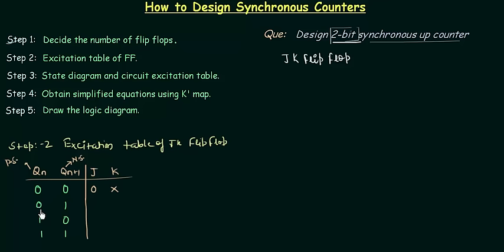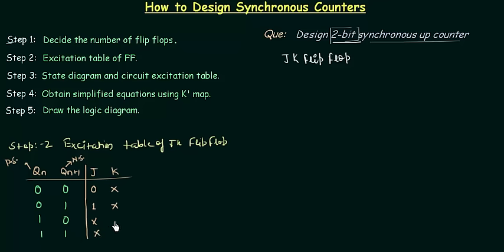When Qn is 0 and Qn+1 is 1, this happens when J is 1 and K is 1 (toggling). Whenever there is toggling we take the complement of the previous state: complement of 0 gives 1. Or J is 1 and K is 0, so again K is the don't care and J is 1. Completing the remaining two cases, we get 1,0 for the last entries. This completes the excitation table for the JK flip flop — we are done with steps 1 and 2.